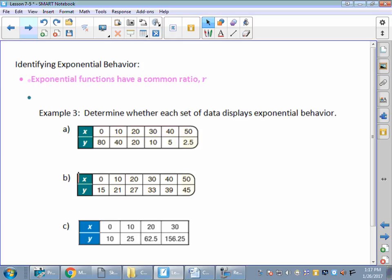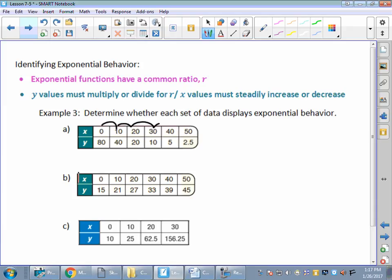We're going to skip 3 and do that one in class. We need to talk about that because of that negative 2. So let's talk about one more thing, exponential behavior. Exponential functions have a common ratio r. I don't know if you remember back in the first semester when we talked about looking for patterns on charts like these guys and we were only allowed to add or subtract. Or when we wrote equations of sequences, we were only allowed to add or subtract. Well, now your y values must multiply or divide. X values, however, have to just steadily increase or decrease.